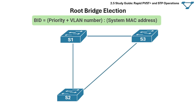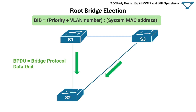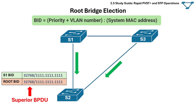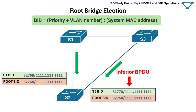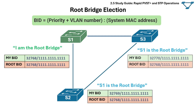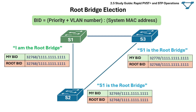In this root bridge election example, switches first exchange BPDU messages. Switch 2 receives BPDUs from both switch 1 and switch 3. The BPDU from switch 1 has a lower bridge ID value than switch 2's own, making it a superior BPDU. The BPDU from switch 3 has a higher value, making it an inferior BPDU, which switch 2 discards. At the end of this process, all switches in the topology must agree on the same single root bridge.